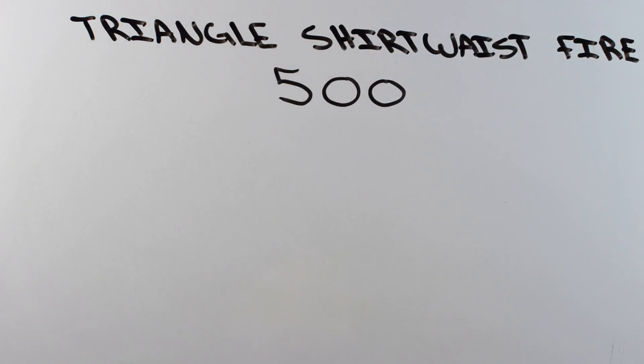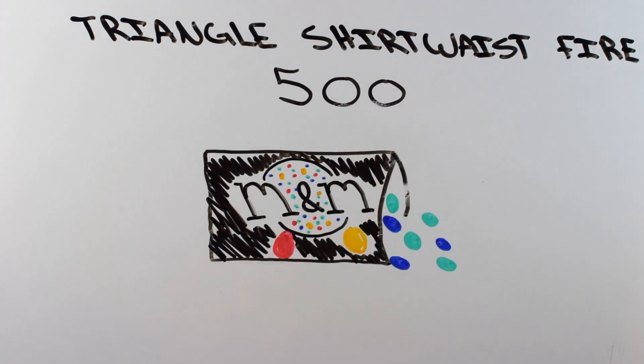For the Triangle Shirtwaist Factory Fire, the death toll is 500, which is the number of M&Ms in a one-pound bag.